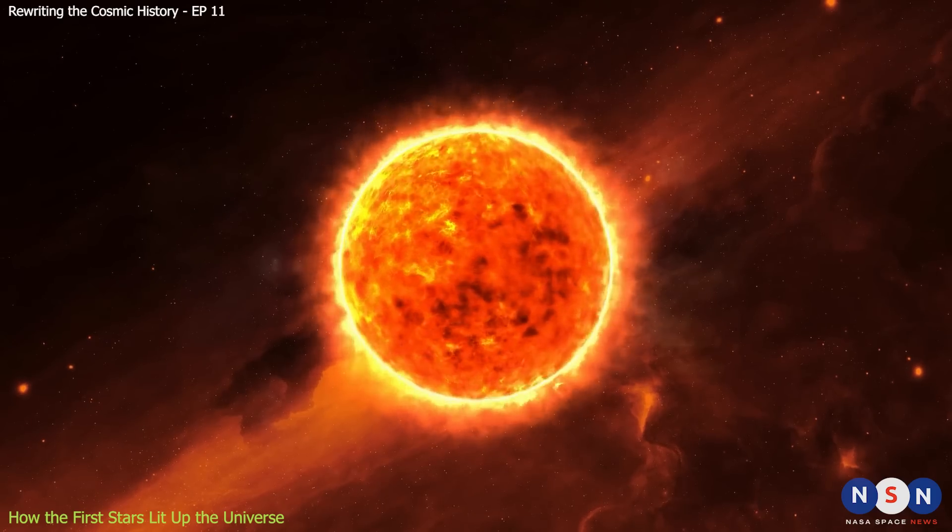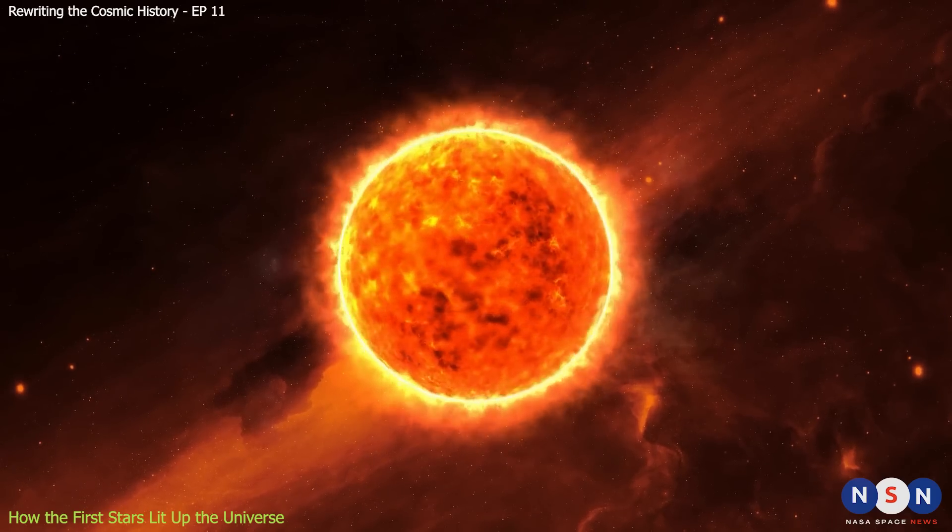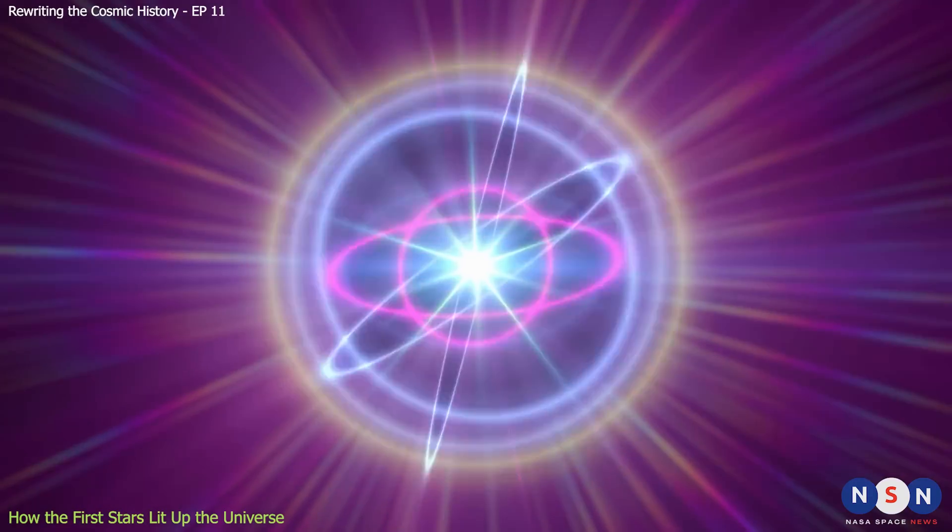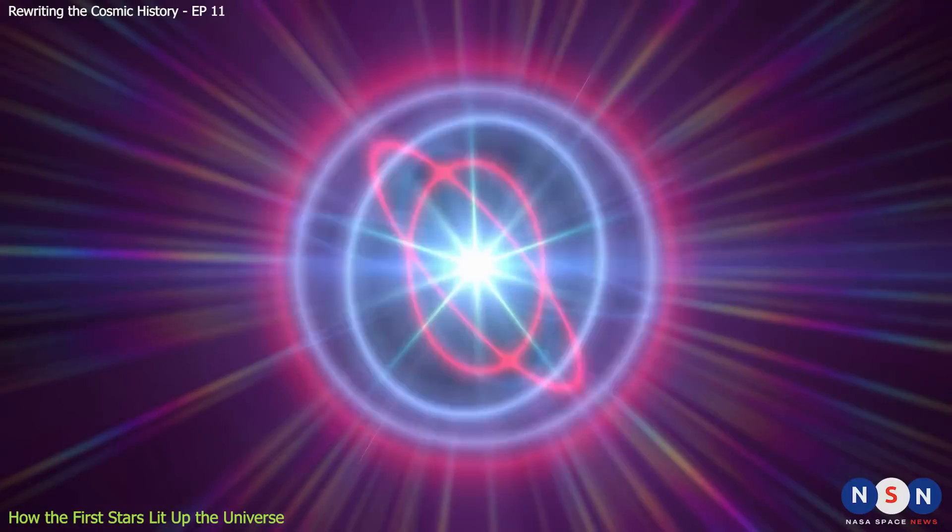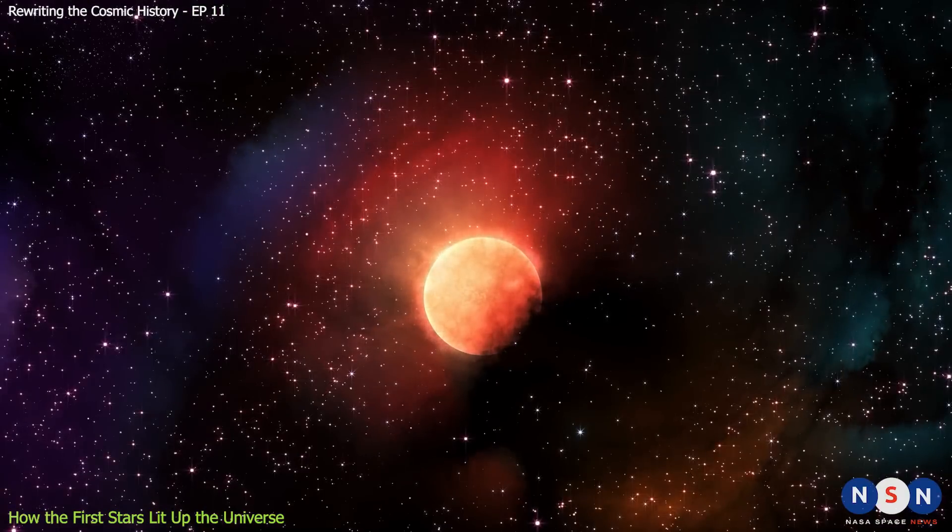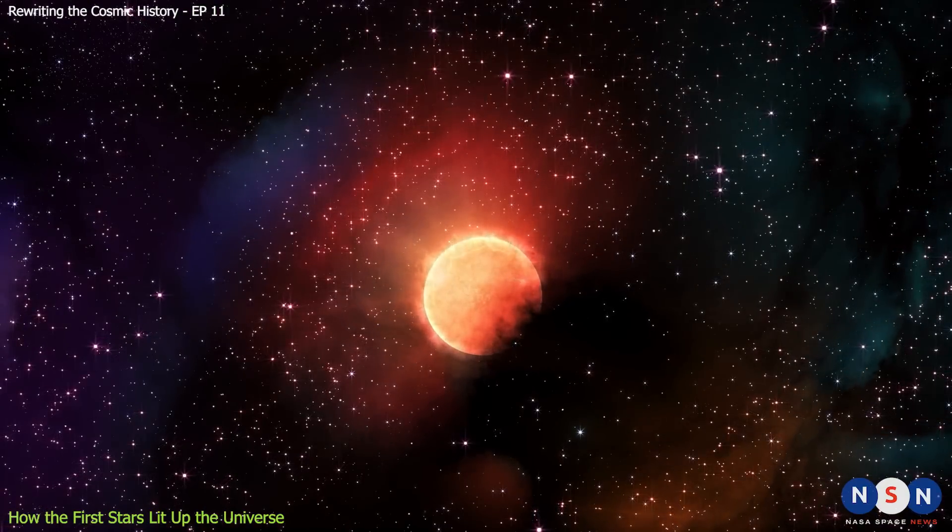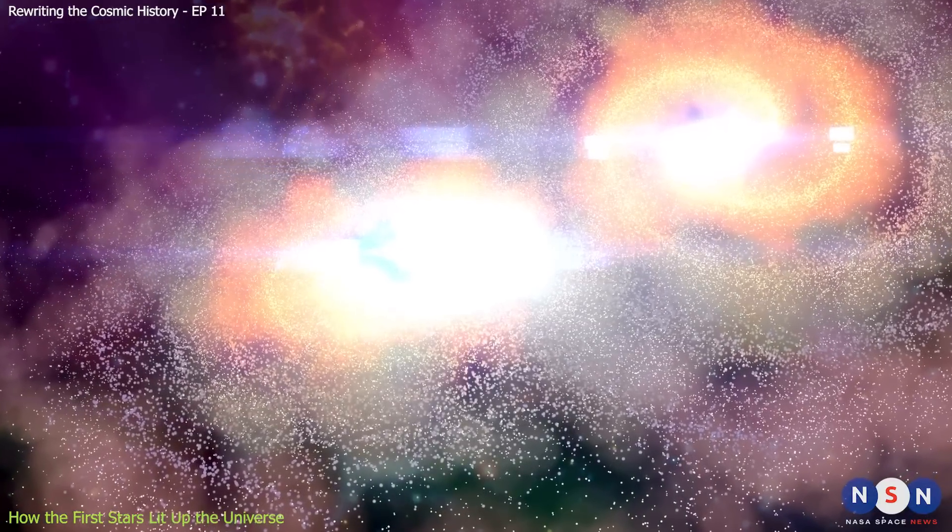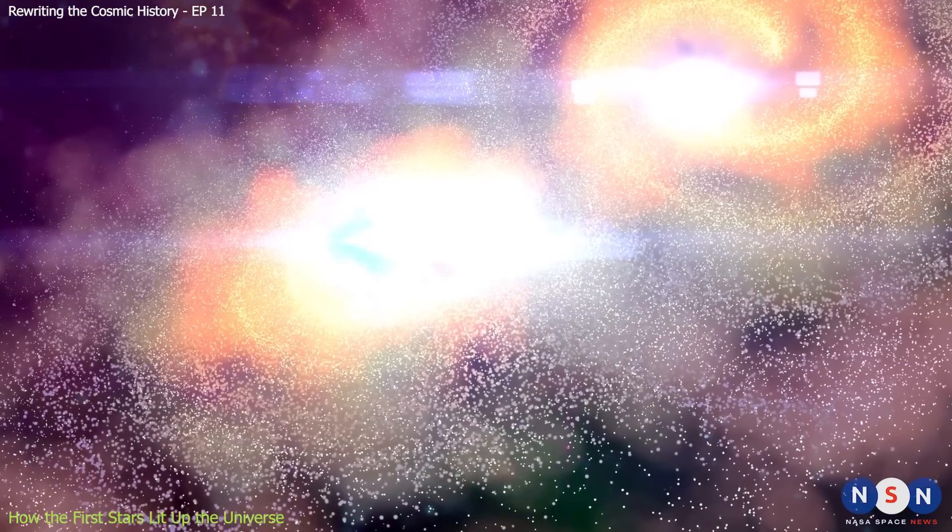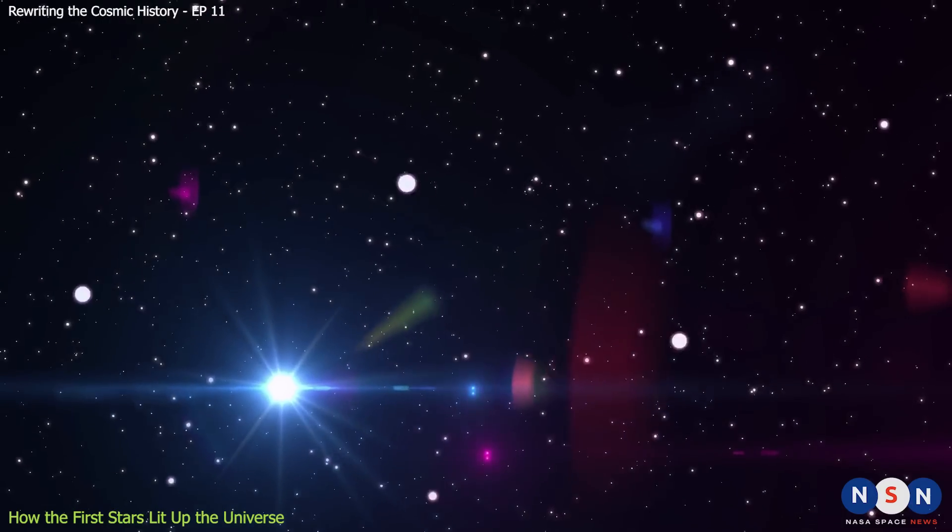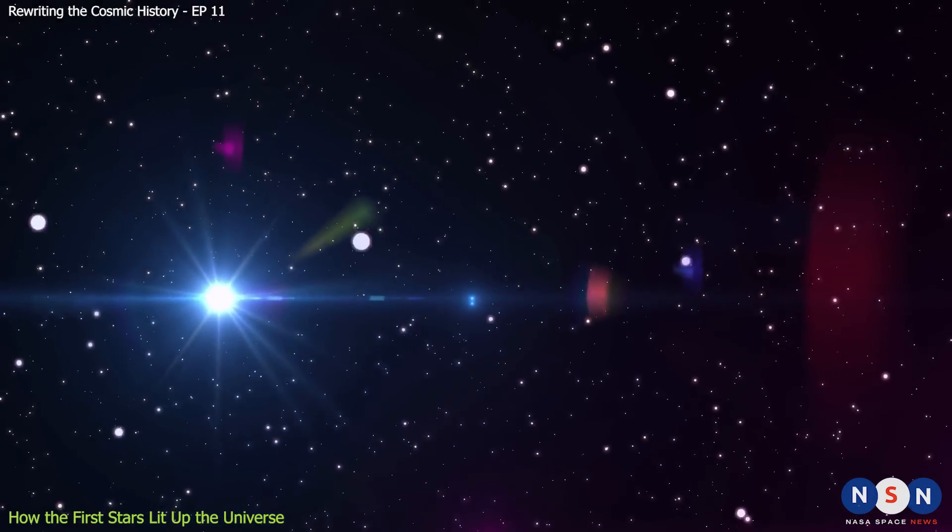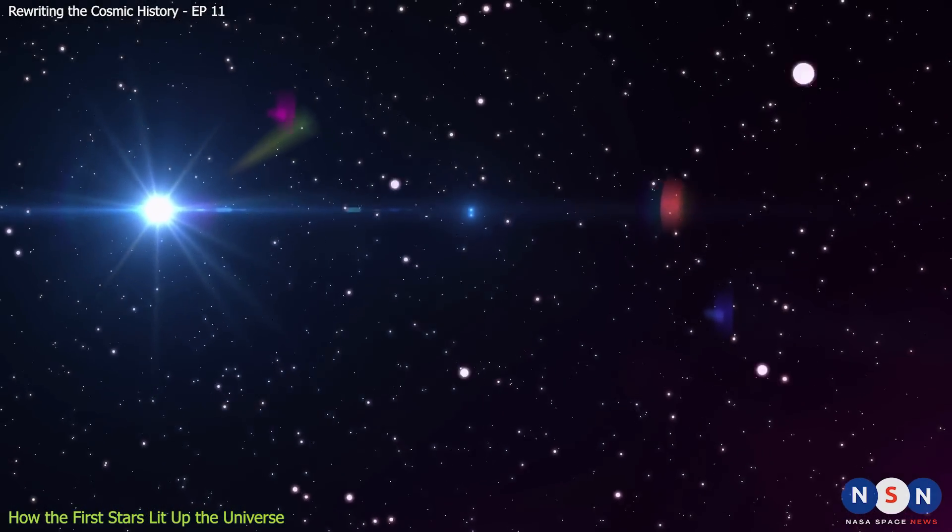They also had very bright lights, up to a million times brighter than our sun. They gave off light that could break apart atoms into particles again. This is how they turned hydrogen atoms into ionized gas around them. These bubbles grew bigger as more stars formed and joined together, eventually filling up most of the space between galaxies. This is how the universe was lit up by Pop 3 stars, ending the cosmic dark ages.